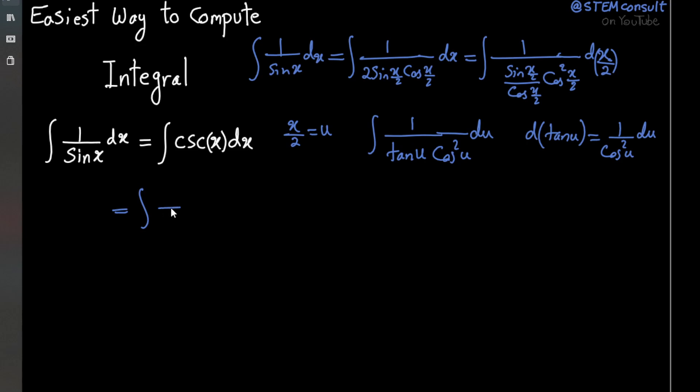So that means we can rewrite our integral as simple as this: integral 1 over tangent u, and then d tangent u, and this is nothing other than as simple as ln absolute value of tangent u, plus c.